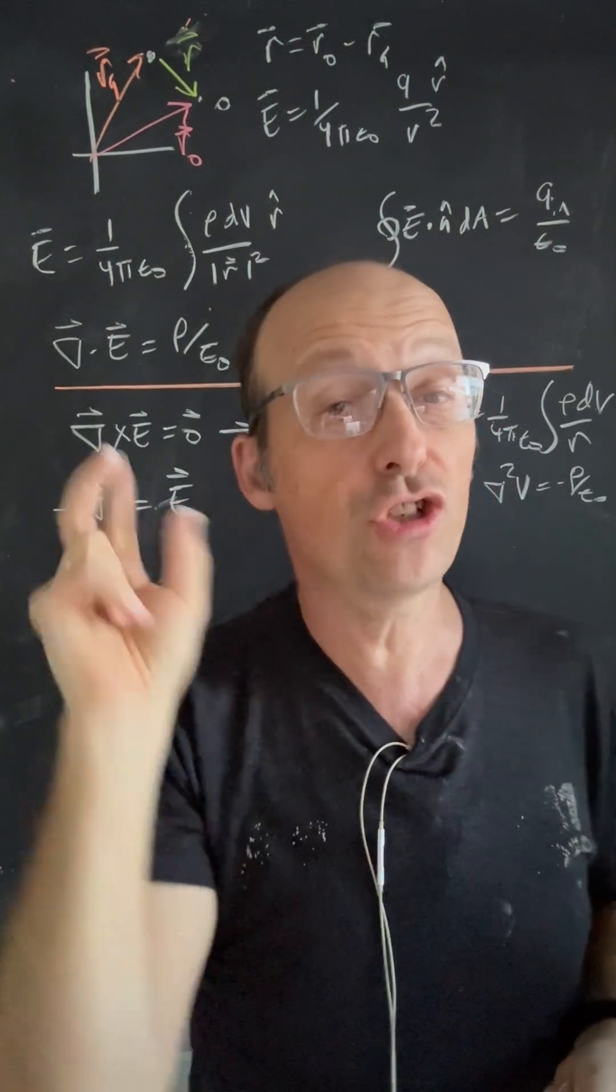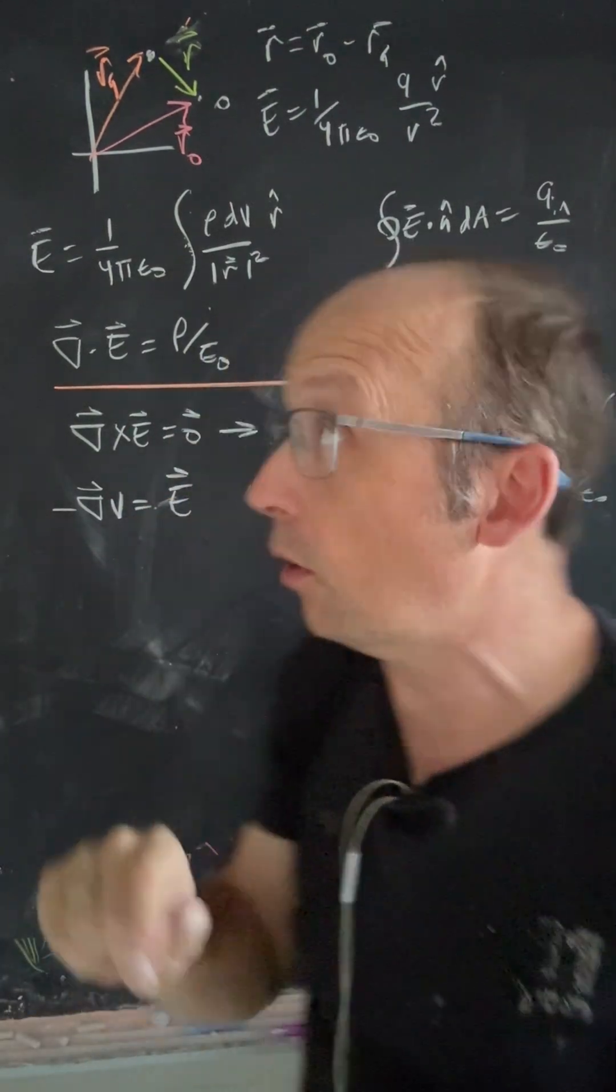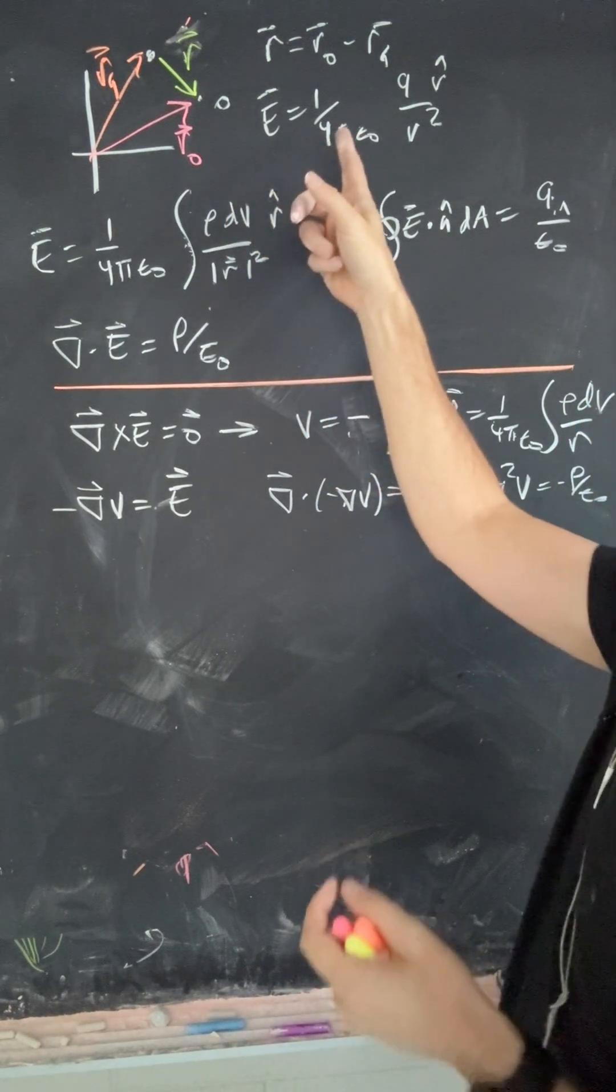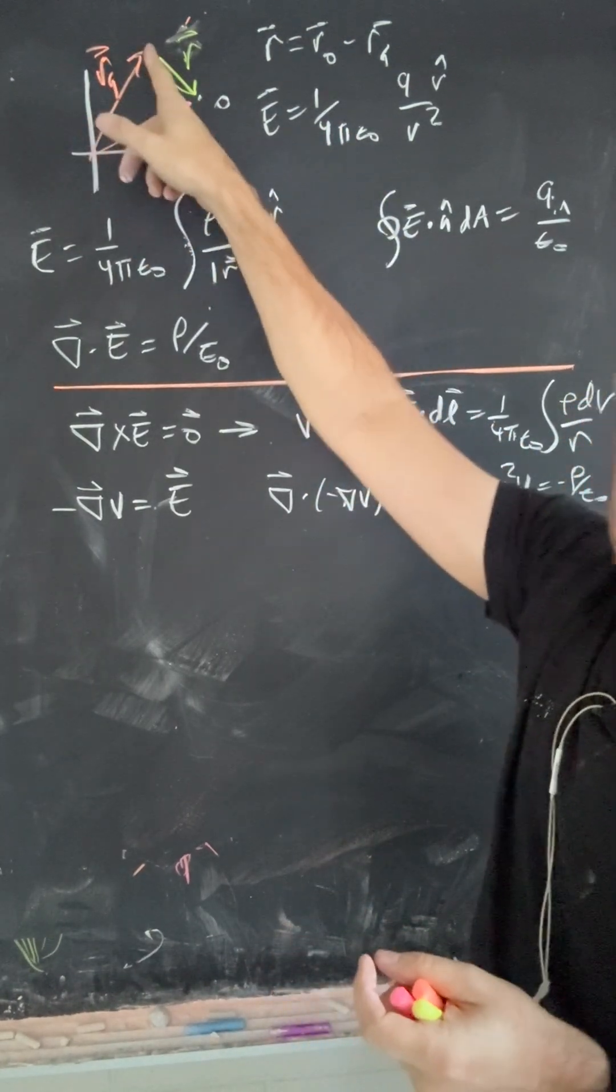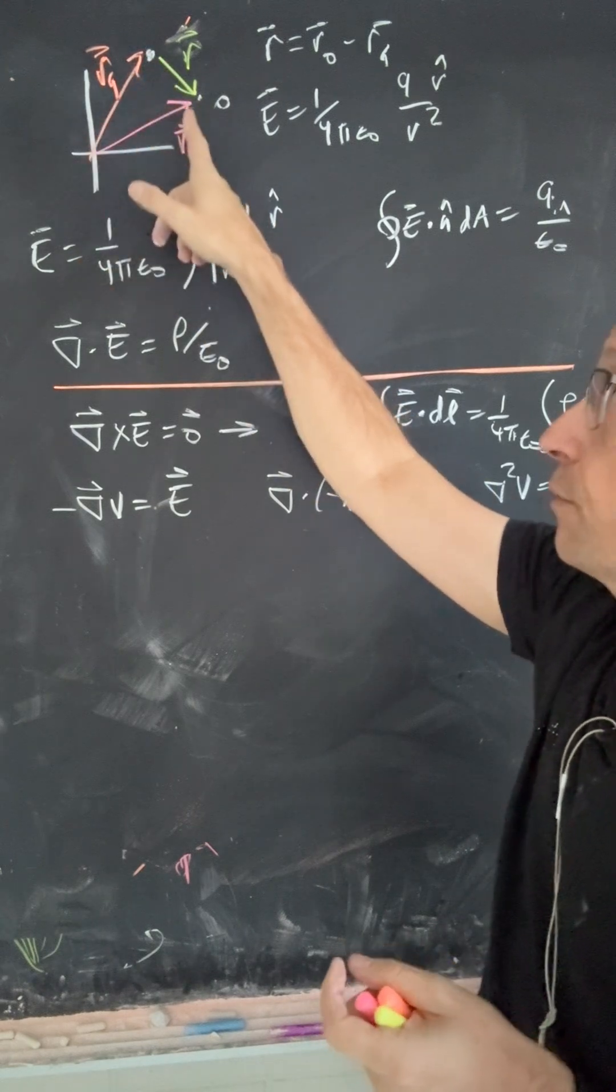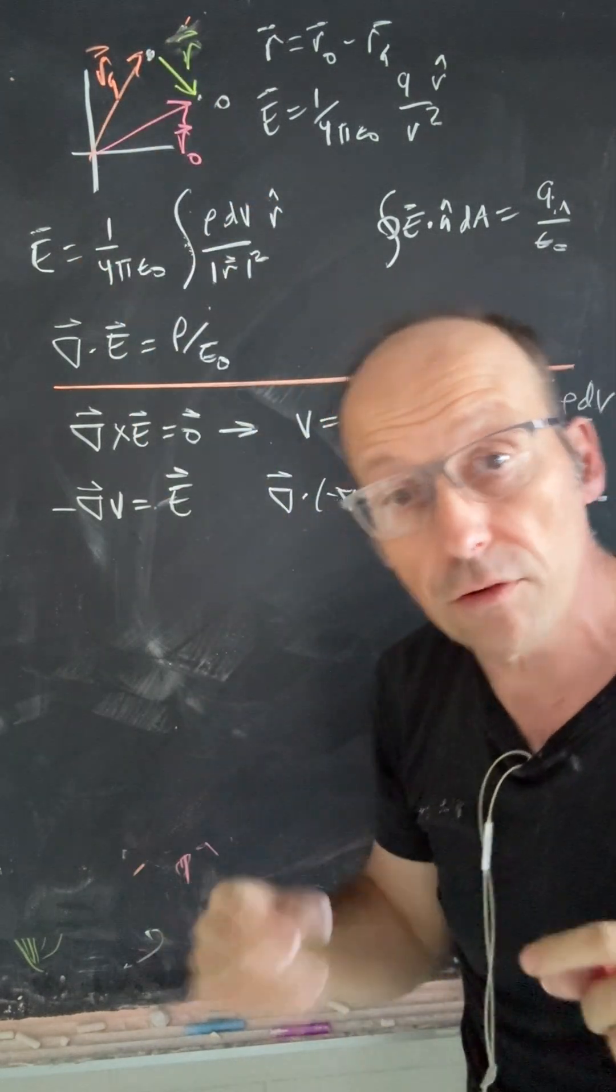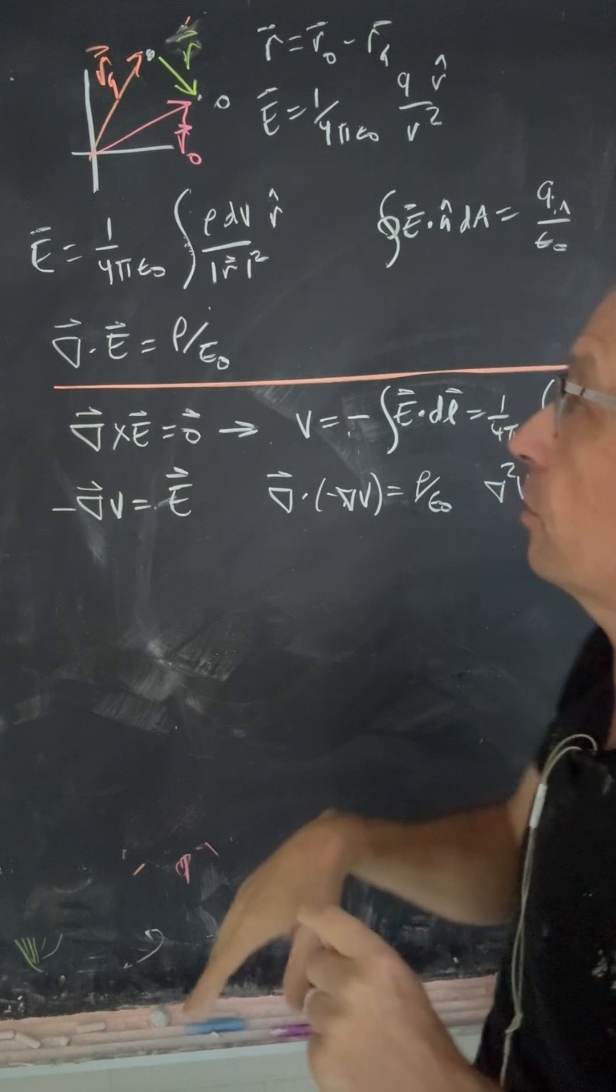Intro to Electrodynamics, Griffith's Chapter 2 Summary. Here we go. We're going to start off with the definition of electric field due to a point charge. Remember this relationship between the vector location of the charge, the observation location, and the vector between those two. That does get a little confusing. The book uses different notation.